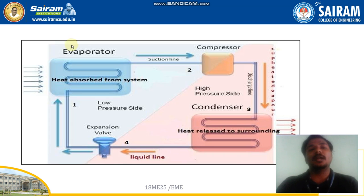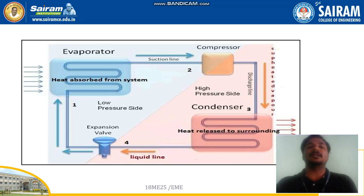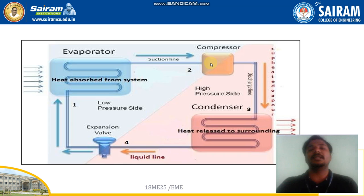After the phase change from liquid to vapor, the compressor draws this vapor at low temperature and low pressure. The function of the compressor is to compress that vapor. When it compresses the vapor, the pressure increases. Once the pressure increases, the temperature also increases — pressure and temperature are related. So the refrigerant, which was partially vapor and liquid, is now compressed to a higher pressure and higher temperature.